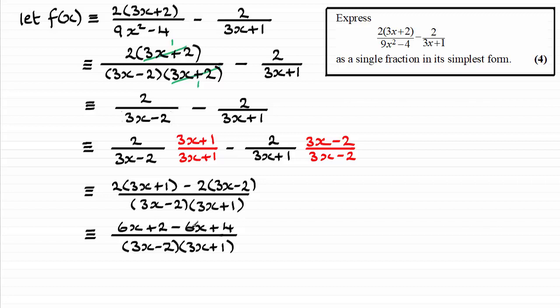And then we can group up these terms on the top and you're just left with the 2 plus the 4, giving us 6 then, all over 3x minus 2 times 3x plus 1.